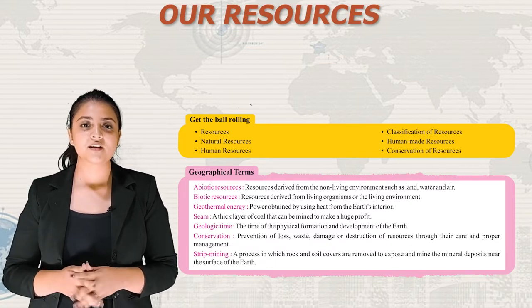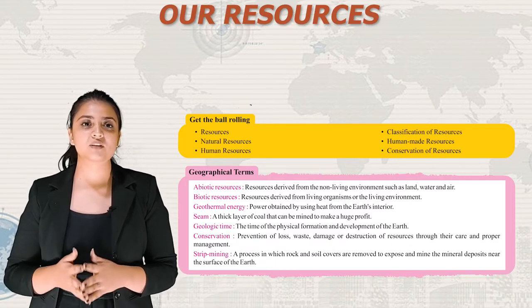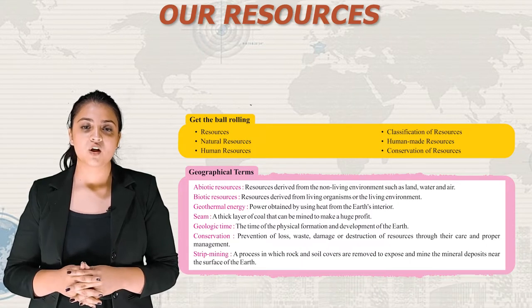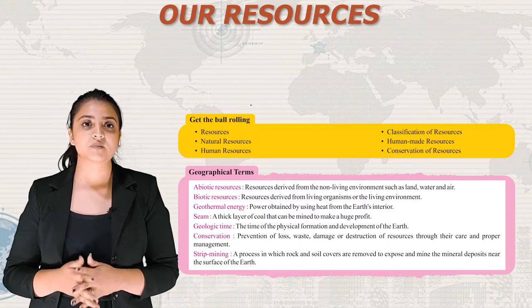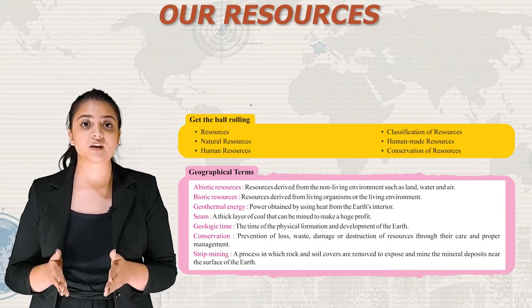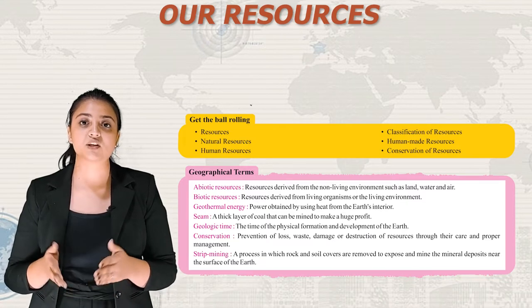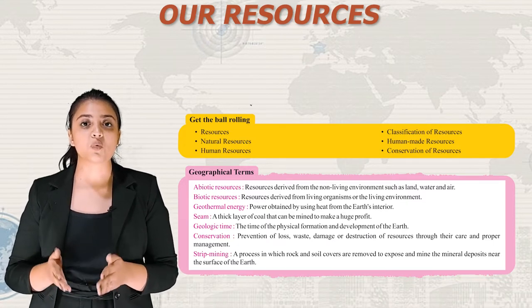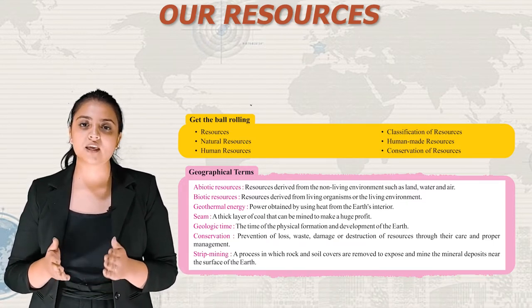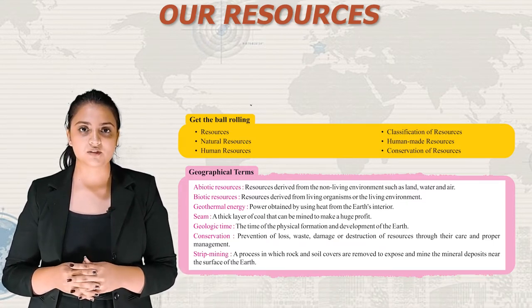First, let's start with geographical terms. The first term is abiotic resources. Resources derived from the non-living environment such as land, water and air are known as abiotic resources.